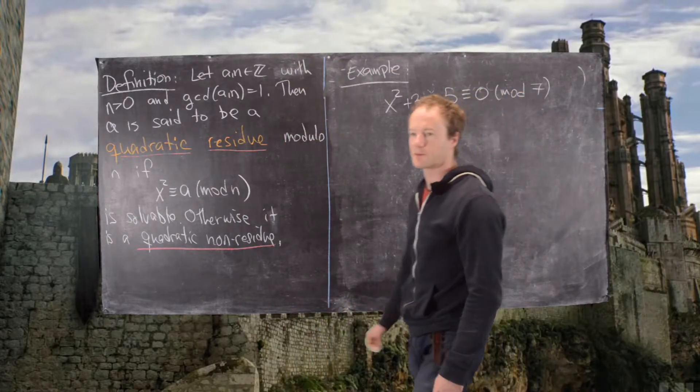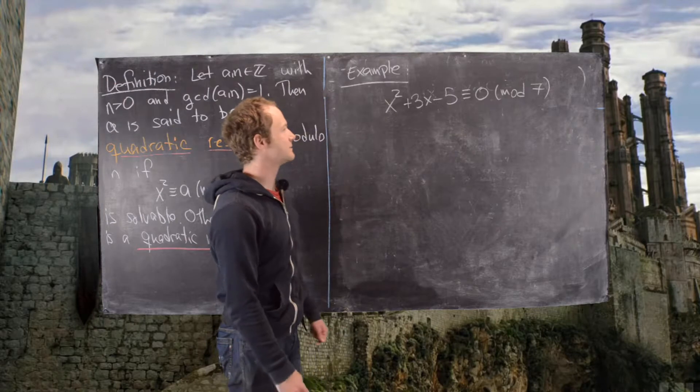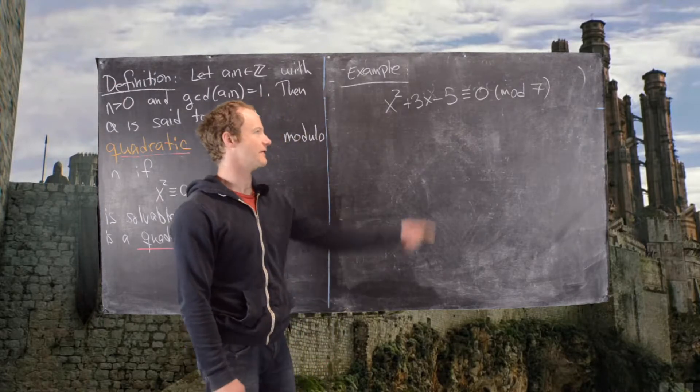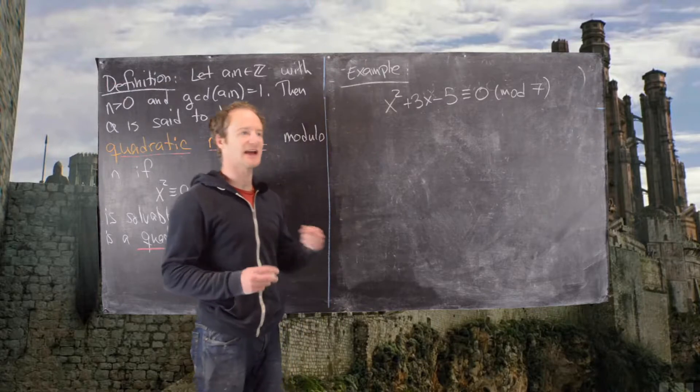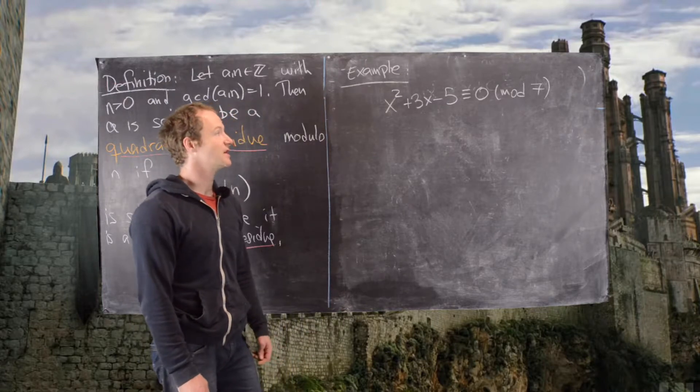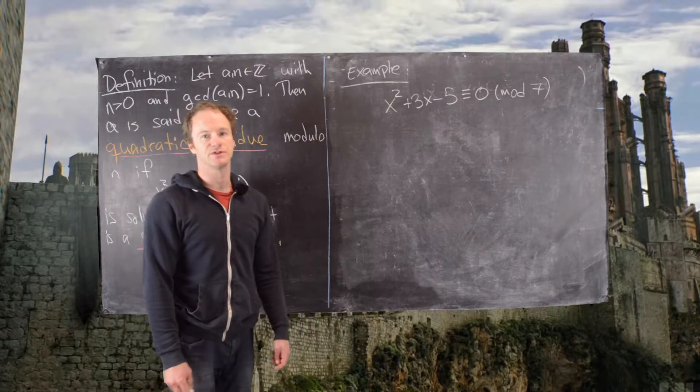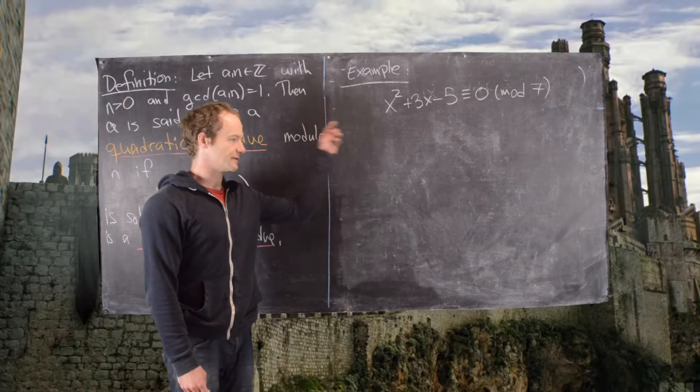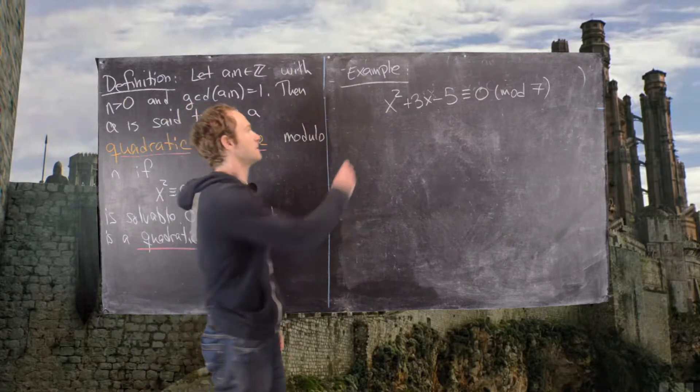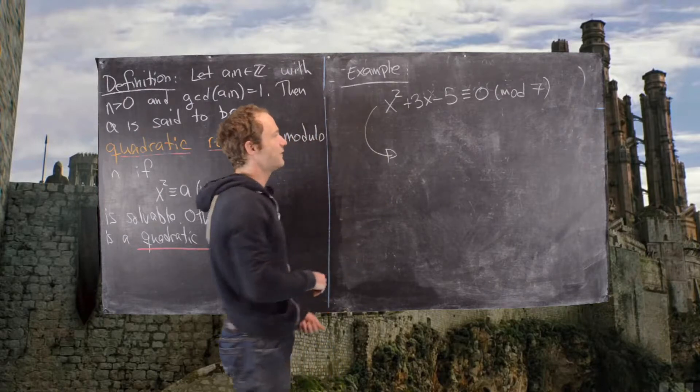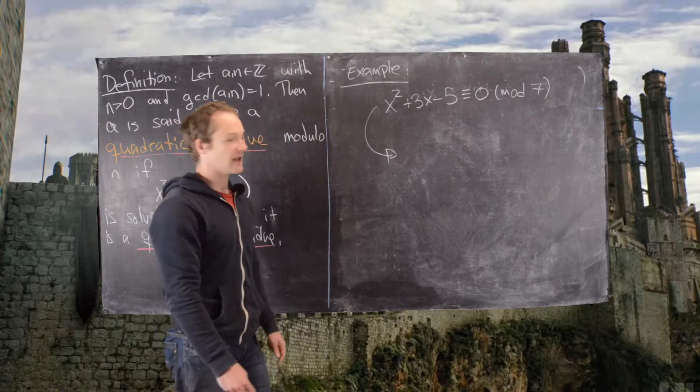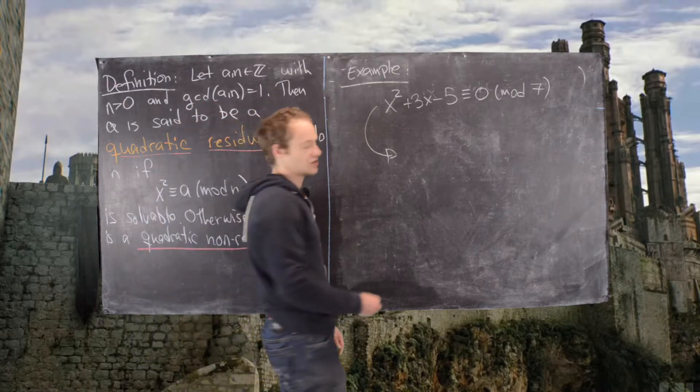So now we're going to look at this example. We have x squared plus 3x minus 5 is congruent to 0 mod 7. So obviously since 7 is a small prime, we could guess and check to see if we had solutions, but we won't do that. We'll use our strategy that was outlined on the last board.